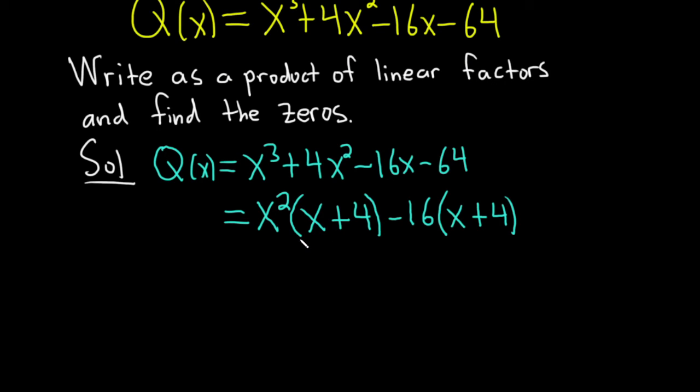Okay, so now we can pull out the common factor, x plus 4. And you can put it in the front or you can put it in the back. I'm going to put it in the front like this, x plus 4. This looks a little bit cleaner. And then you say, what do you multiply by x plus 4 in order to get x squared times x plus 4? Well, x squared, because x plus 4 times x squared is x plus 4 times x squared, just written backwards.